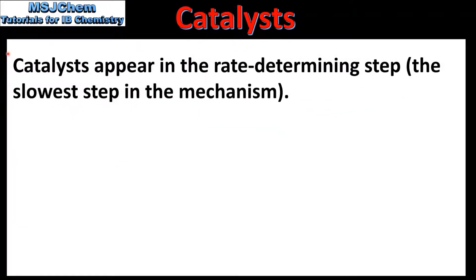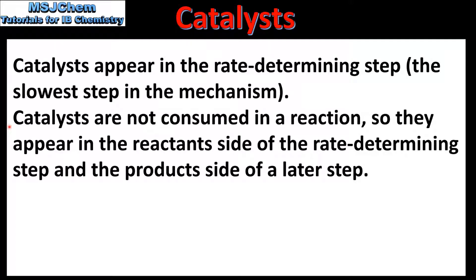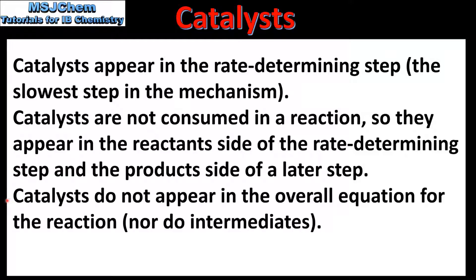Next we look at catalysts and reaction mechanisms. The first point is that catalysts appear in the rate determining step, which is the slower step in the mechanism. Catalysts are not consumed in a reaction, so they appear in the reactant side of the rate determining step and the product side of a later step — in other words, they are consumed in one step and regenerated in a later step. Finally, catalysts do not appear in the overall equation for the reaction, nor do intermediates.